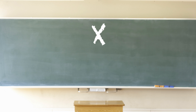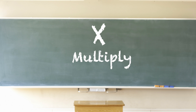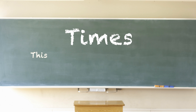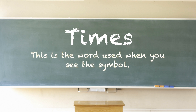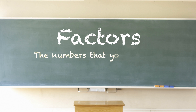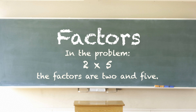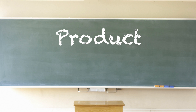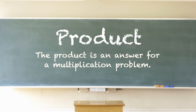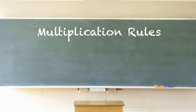Here are some special words and symbols related to multiplication. This is the symbol that tells you to multiply a number with another number — the symbol tells you to multiply. 'Times' is the word used when you see the symbol; here is how you will read it: four times three. The numbers that you multiply together are called factors. In the problem two times five, the factors are two and five. The product is the answer to a multiplication problem — six is the product for two times three, because two times three equals six.